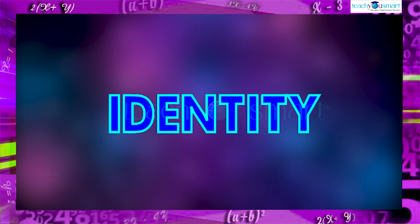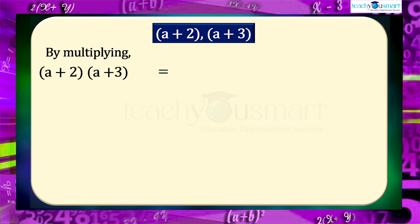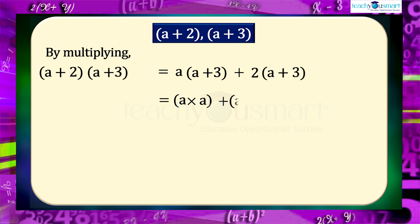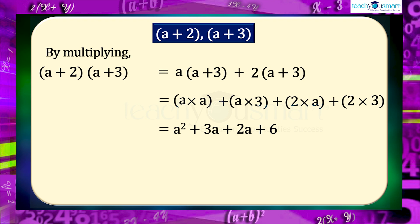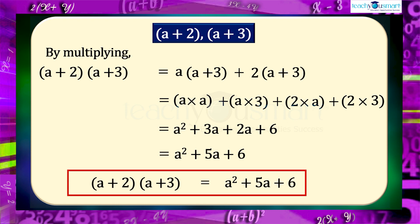a plus 2 and a plus 3 are two binomials. Multiplying: (a+2)(a+3) = a(a+3) + 2(a+3) = a² + 3a + 2a + 6. Adding like terms, we get a² + 5a + 6. So we get the equality: (a+2)(a+3) = a² + 5a + 6.